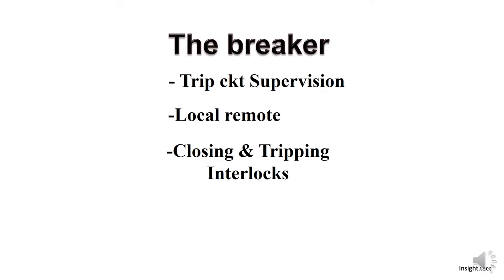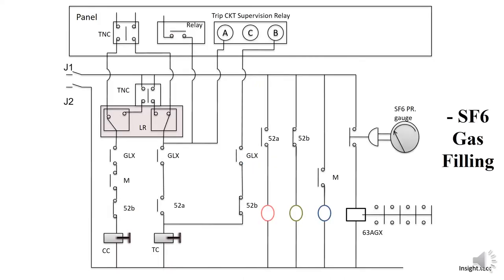In Breaker, we will see Trip Circuit Supervision, Local and Remote, and Closing and Tripping Interlocks. We will see how the Breaker Closing and Tripping is shown here. Here we have a Breaker Circuit Control Wiring, and with the panel the wire is shown here. What is commonly seen in a Breaker is shown here.